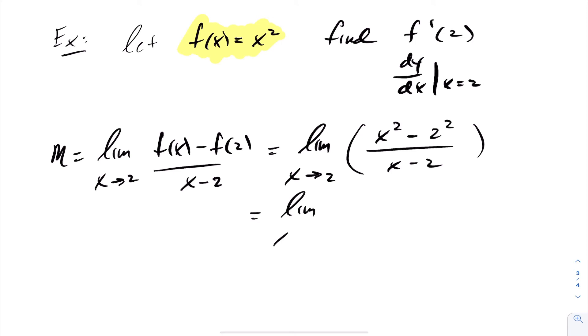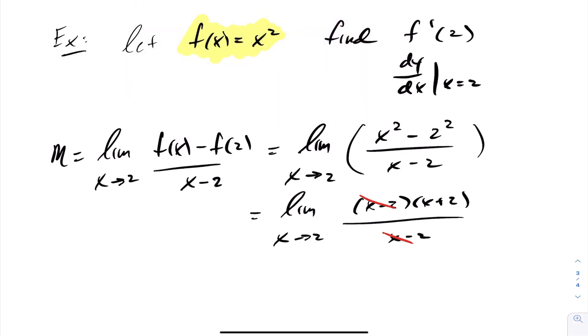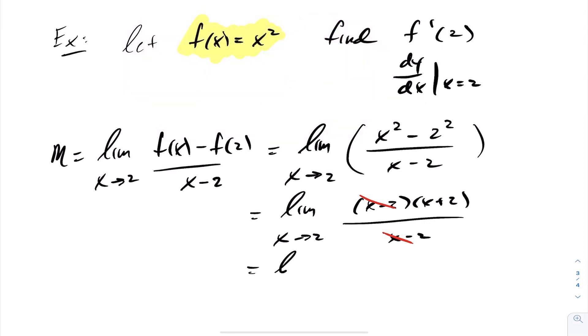We can do difference of squares on the top to get (x minus 2)(x plus 2) over x minus 2. Taking the limit as we approach 2, these cancel, giving us the limit as x goes to 2 of x plus 2. Substituting in 2, we get a limit of 4.